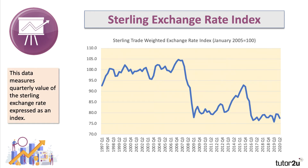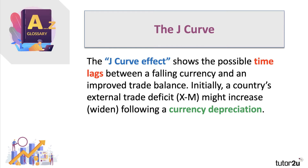Well, the answer is no. Often there is something called the J-curve effect. The J-curve effect basically shows the possible time lags between a falling or depreciating currency and hopefully an improved trade balance. The J-curve is the diagrammatic representation of something called the Marshall-Lerner condition, which we'll come to in a second.